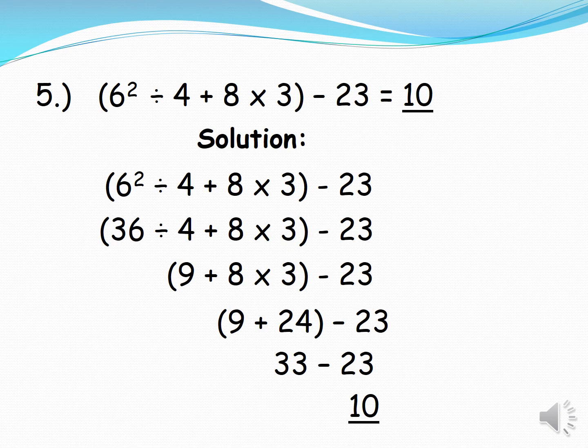Example 5: (6²÷4+8×3)−23=10. Solution: 6²=36, then 36÷4=9, then 8×3=24, then 9+24=33, then 33−23=10.